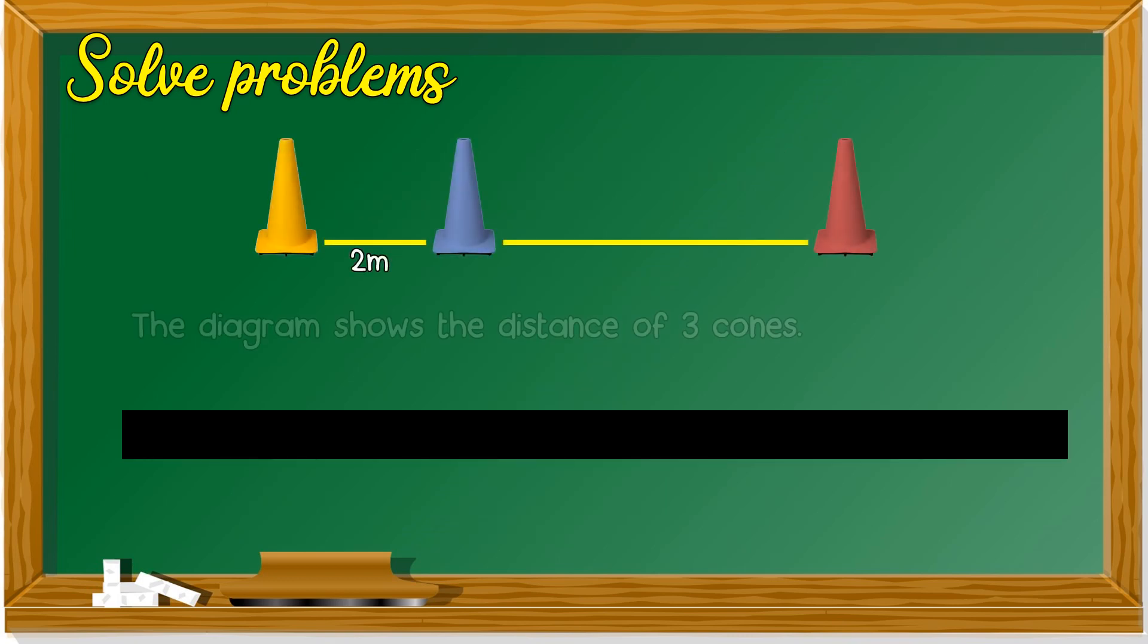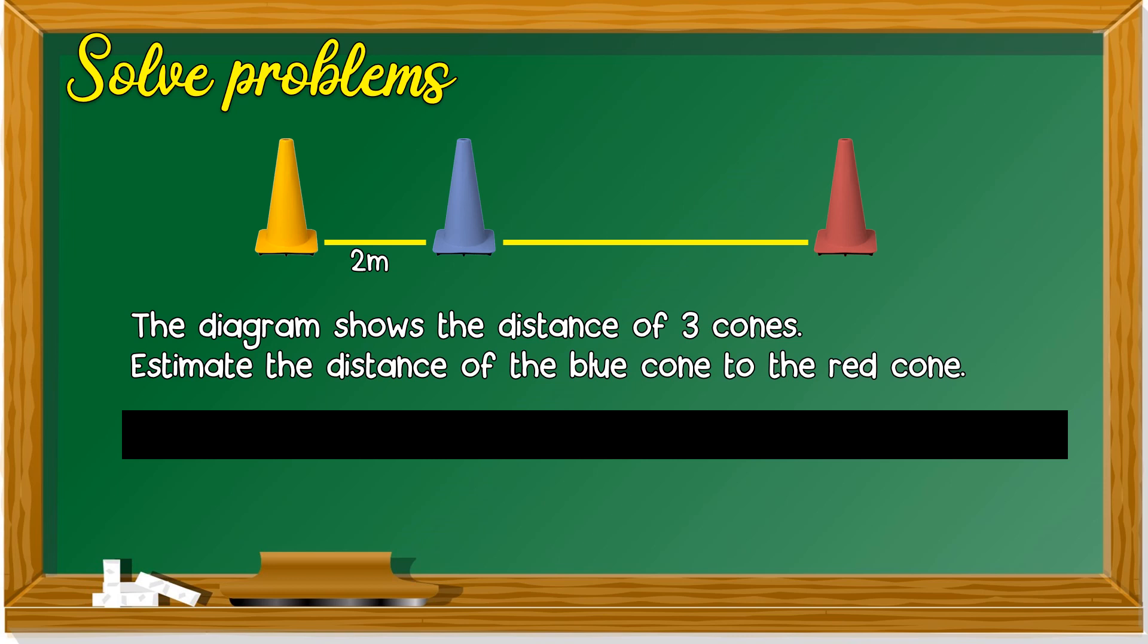Next question. The diagram shows the distance of 3 cones. Estimate the distance of the blue cone to the red cone. Distance, jarak. So here we can see that from the yellow cone to the blue cone is 2 m. Roughly, we see this is 2 m, another 2 m, another 2 m.